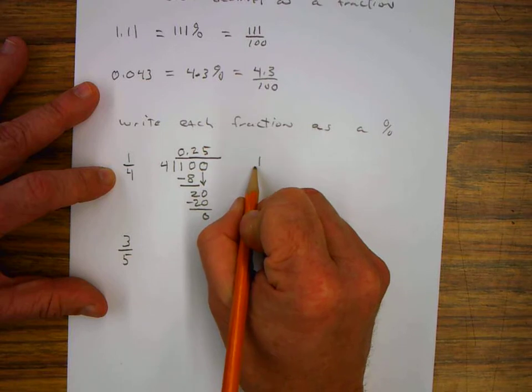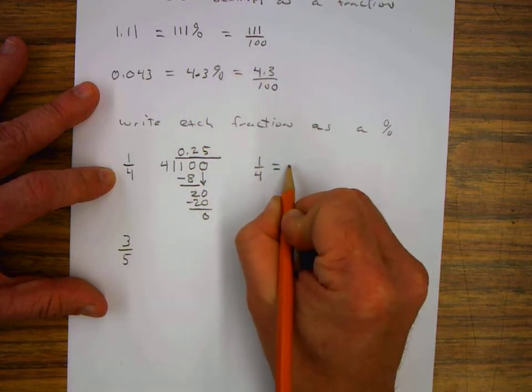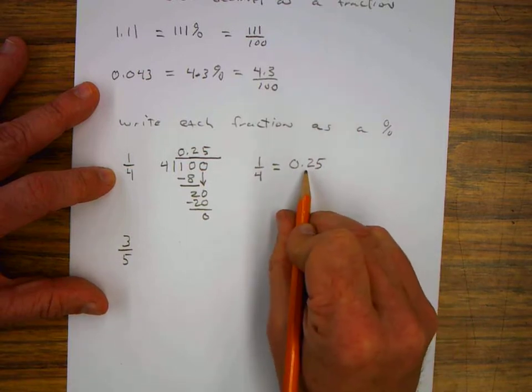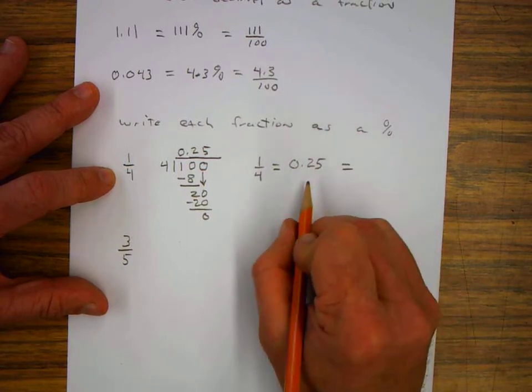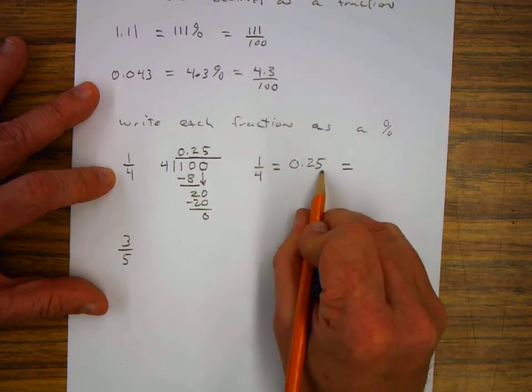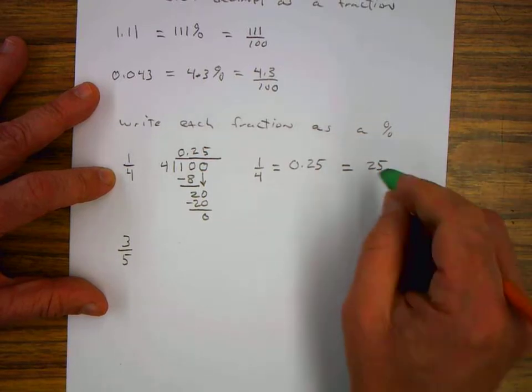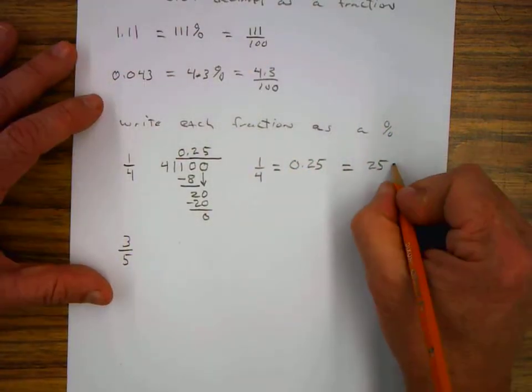So 1 fourth we know is equal to 0.25. If I want to convert this to a percent, I move the decimal to tenths, hundredths place, and I write 25. 25 percent.